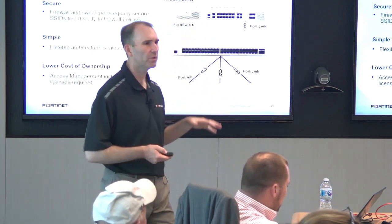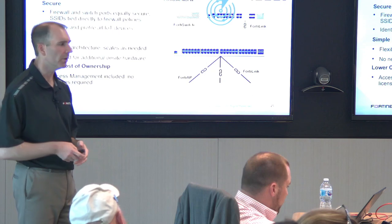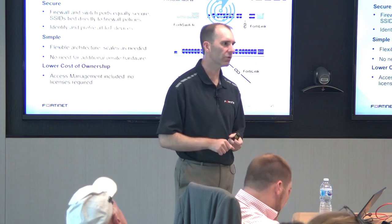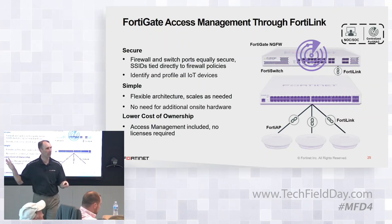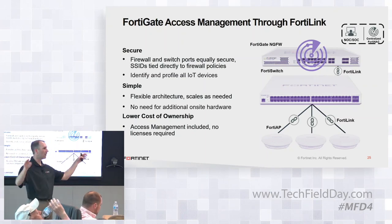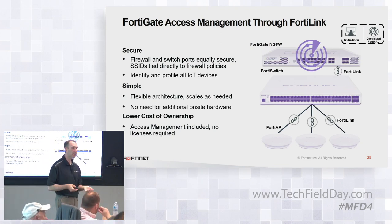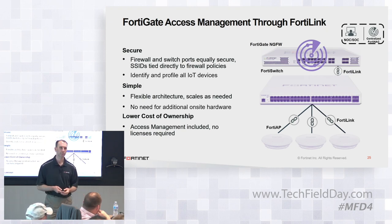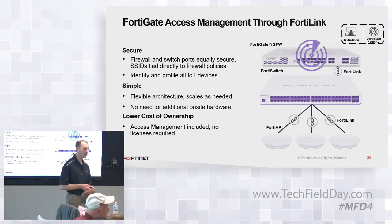FortiNAC has the ability to use the FortiGate as a traffic sensor, so I don't have to put extra gear in the branch for FortiNAC. FortiNAC can sit at my NOC/SOC overseeing all my branches, talking to the FortiGate and getting information from it. Since the FortiGate manages the access layer, FortiNAC has visibility down through the access layer — giving IoT visibility without putting anything else on site.